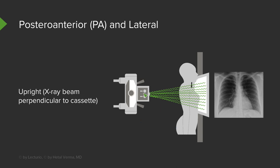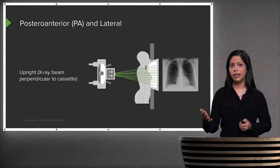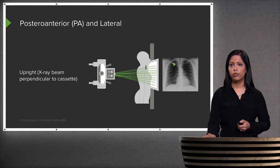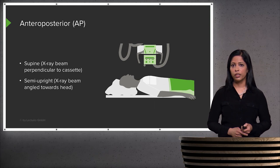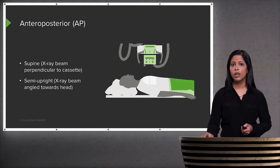On a PA film, the patient stands facing the detector with the x-ray beam coming in and penetrating from posterior to anterior. The terminology 'postero-anterior' tells you the direction of the x-ray beam — it's entering the patient posteriorly and exiting anteriorly, meaning the detector is located anteriorly. An anteroposterior film, by contrast, means the x-ray enters anteriorly and exits posteriorly, with the detector located posterior to the patient.